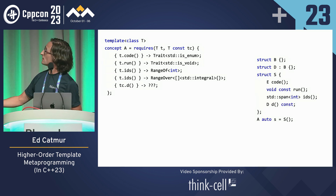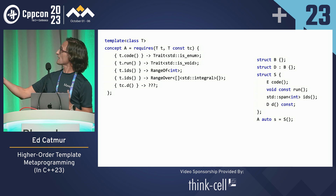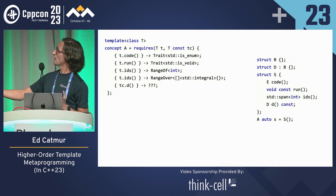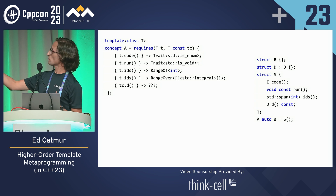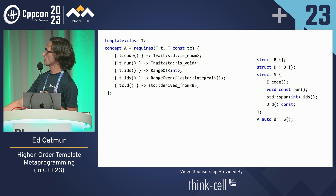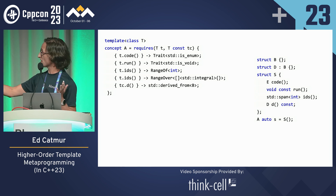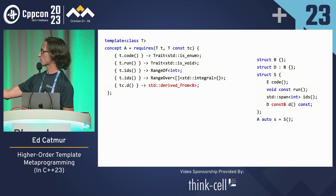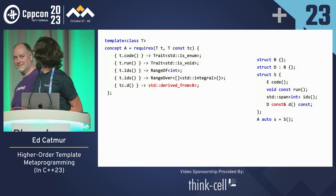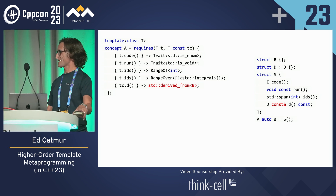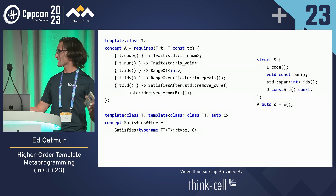Looking at class hierarchy — we want to constrain this function to return something derived from B. That's fine, but what if we change it to return by const reference, derived from... Am I out of time? You are. Oh my goodness. Okay, this was so much quicker than I expected. Thank you so much.